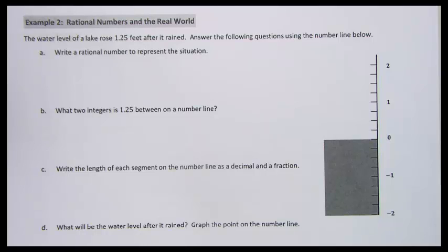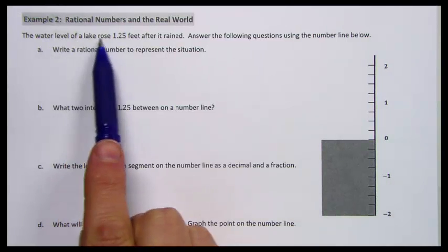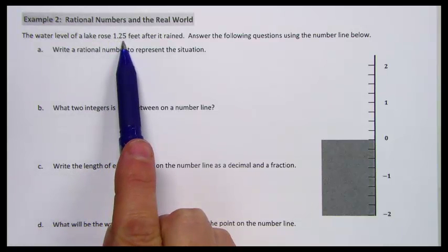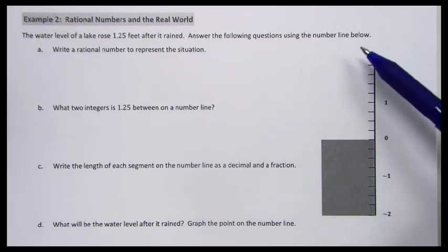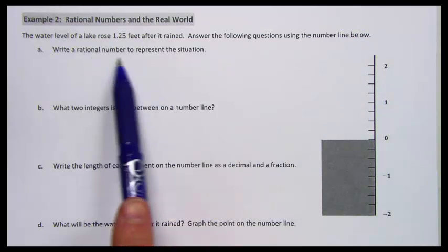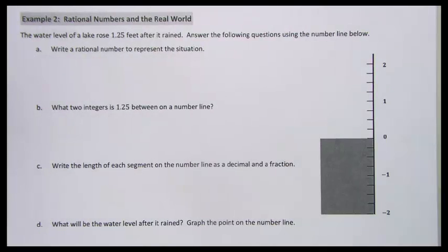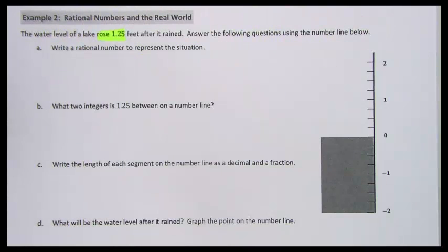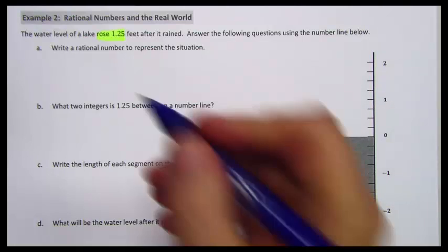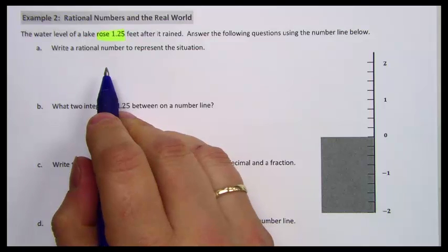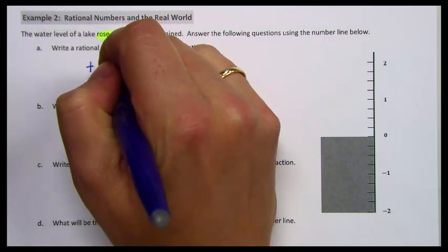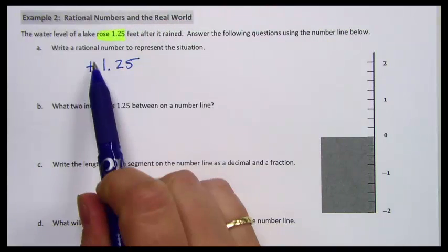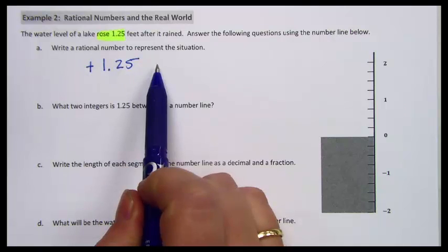In this example, we're going to look at a vertical number line. This number line represents the water level in a lake. The water level of a lake rose one and twenty-five hundredths — one and a quarter feet — after it rained. We're going to answer questions using this number line. We need to write a rational number to represent the situation. Since the water level rose, it is a positive number: positive one and twenty-five hundredths feet.